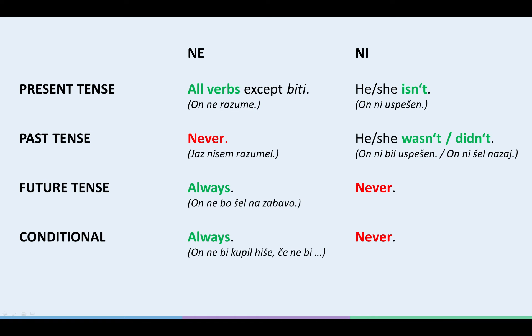So, if we now highlight the relevant parts on screen, we will see when NI is used. NI is ONLY used when we say HE or SHE ISN'T. That's the present tense. But like we said, because the present tense of the verb TO BE functions as a helping verb in forming the past tense, we also use NI when we say HE, SHE WASN'T, or HE, SHE DIDN'T.